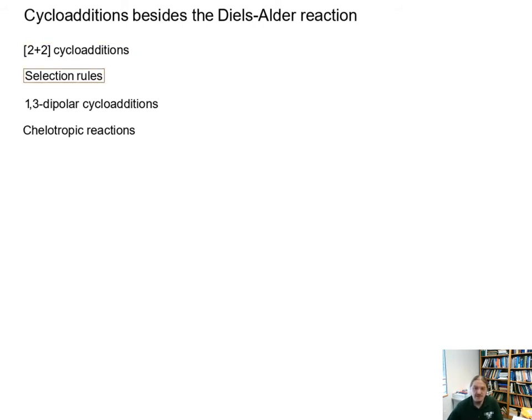We're going to cover 2+2 cycloadditions and use that as a point to talk about selection rules for cycloadditions, and then we're going to talk about 1,3-dipolar cycloadditions and chelotropic reactions.